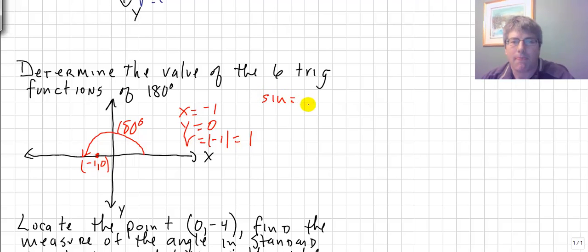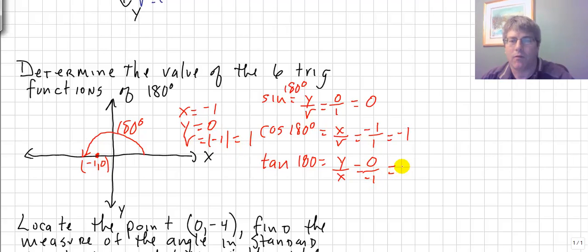So then we can zip through our trig functions. Sine is y over r, and since y is 0 and r is 1, the sine of 180 degrees is 0. The cosine of 180 equals x over r. Well, x is negative 1, and r is 1, so negative 1 over 1 is negative 1. So the cosine of 180 is negative 1. The tangent of 180 is equal to y over x. Well, y is 0 and x is negative 1. 0 over negative 1 is 0.